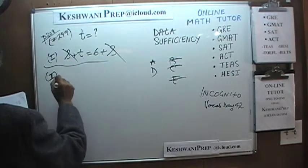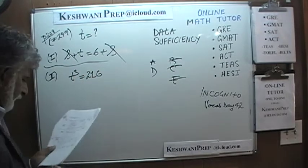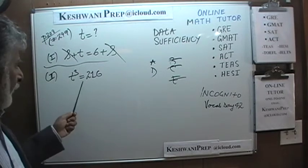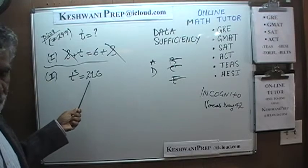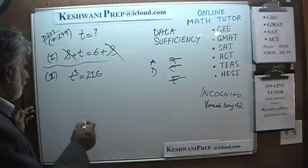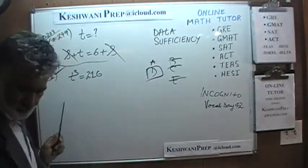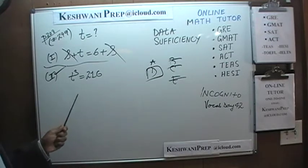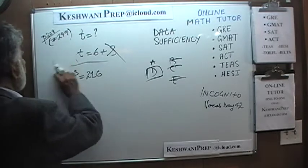The second statement tells us that T cubed equals 216. Even if you don't know the cube root of 216 off the top of your head, you can take the cube root of both sides — T equals the cube root of 216, which happens to be 6. The second statement by itself is also enough, so the answer is D.